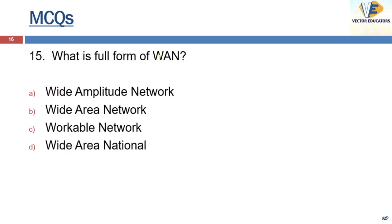What is the full form of WAN? It is Wide Area Network. It is made up of all networks in a geographically large area — that is, an entire state.